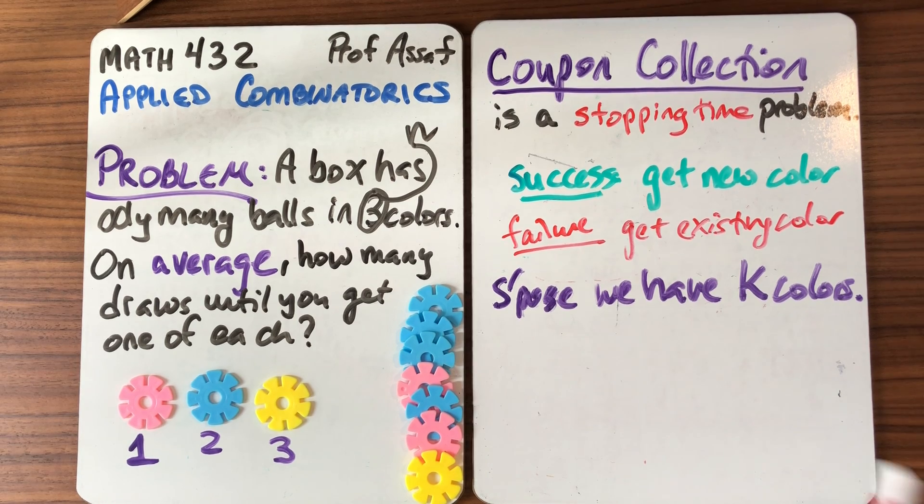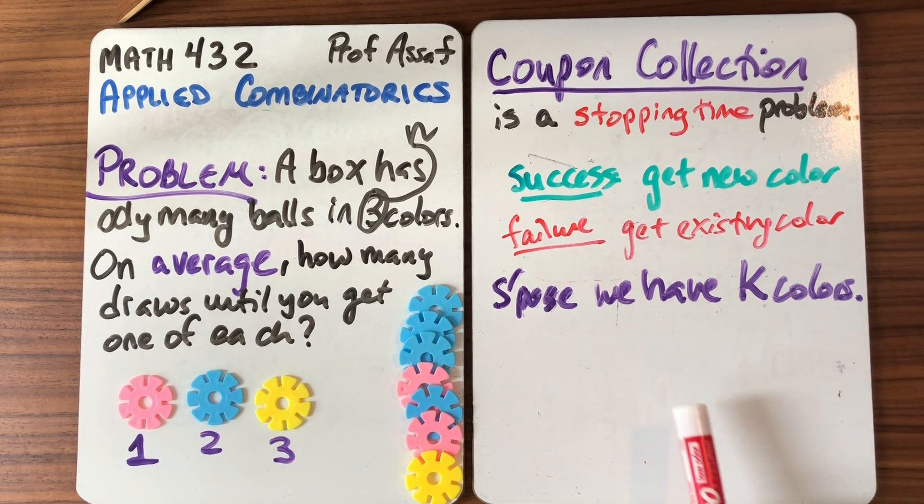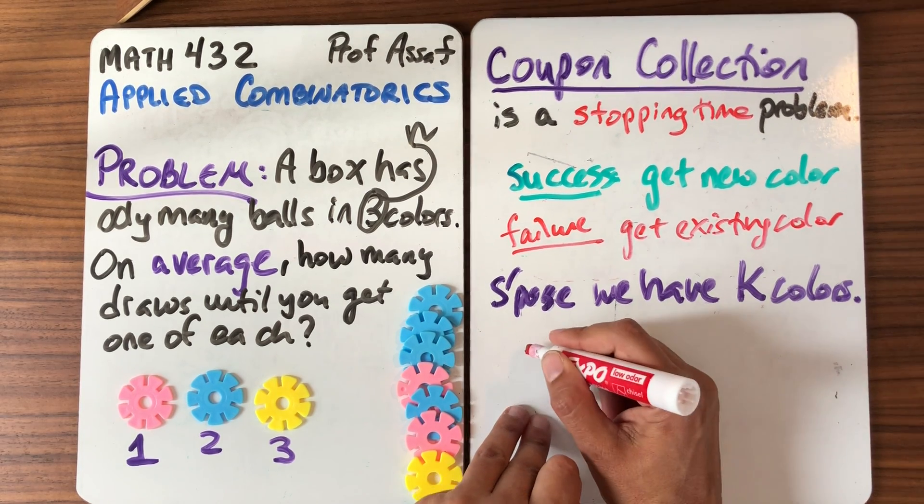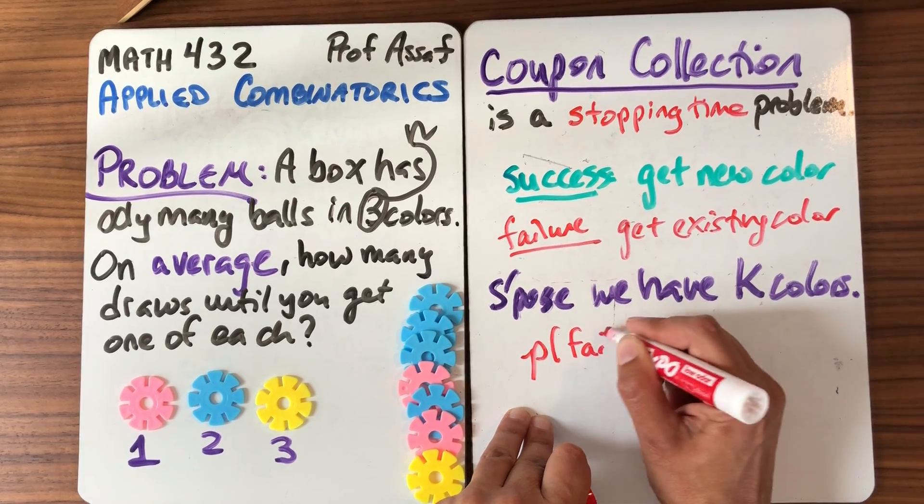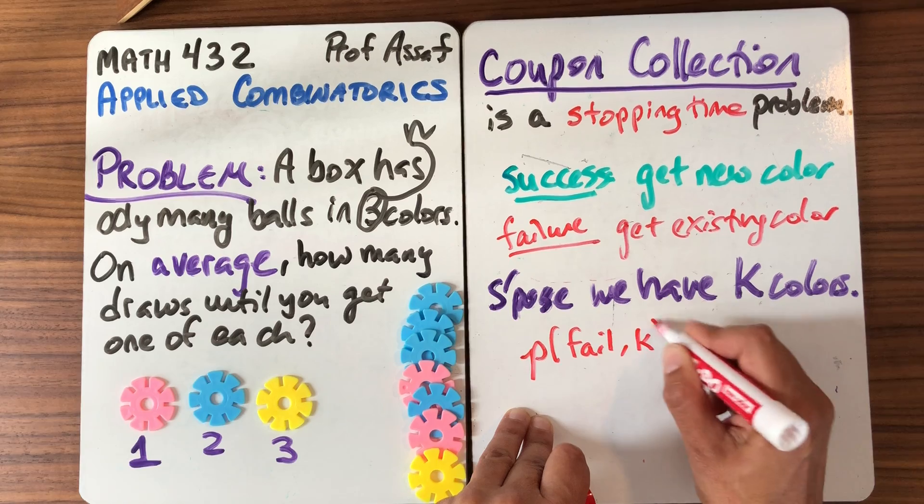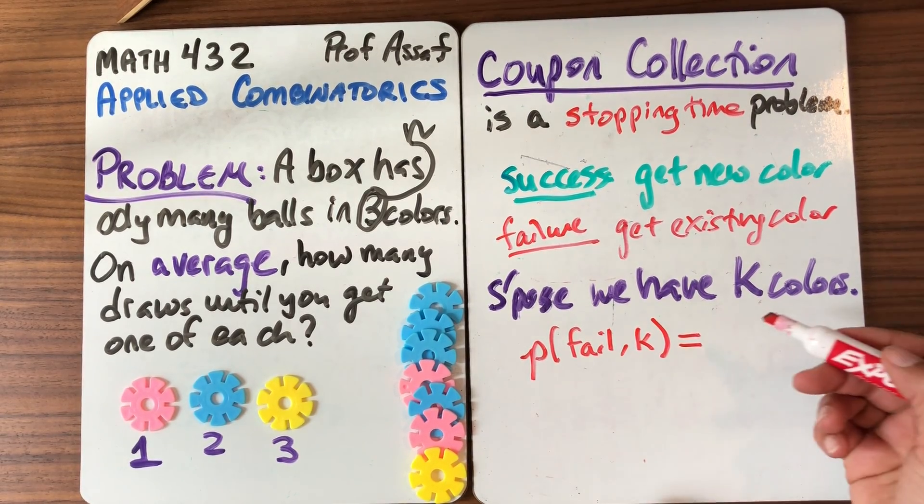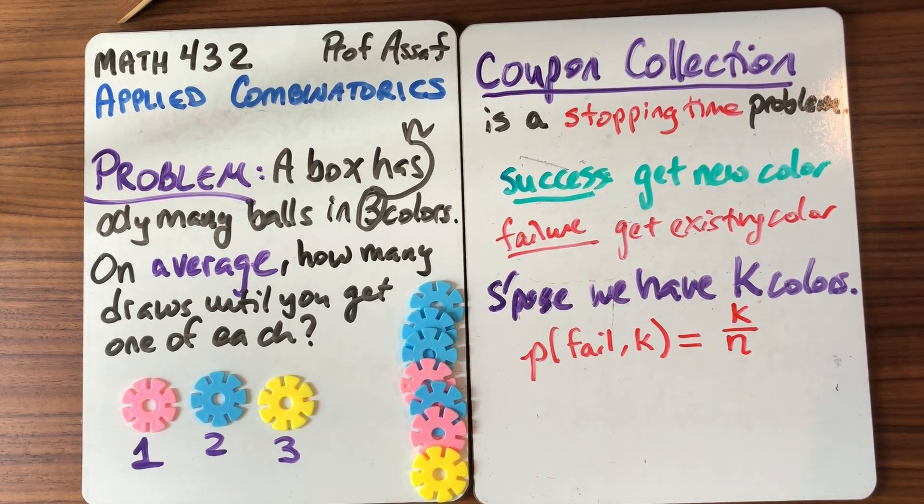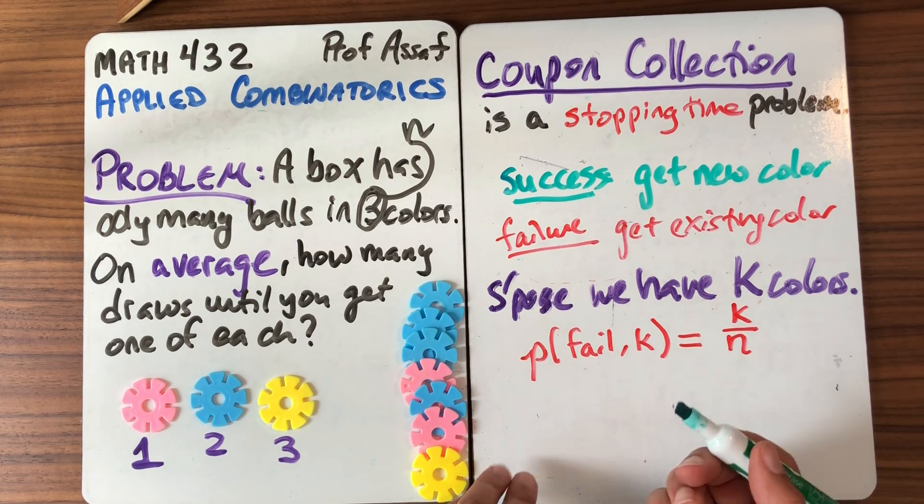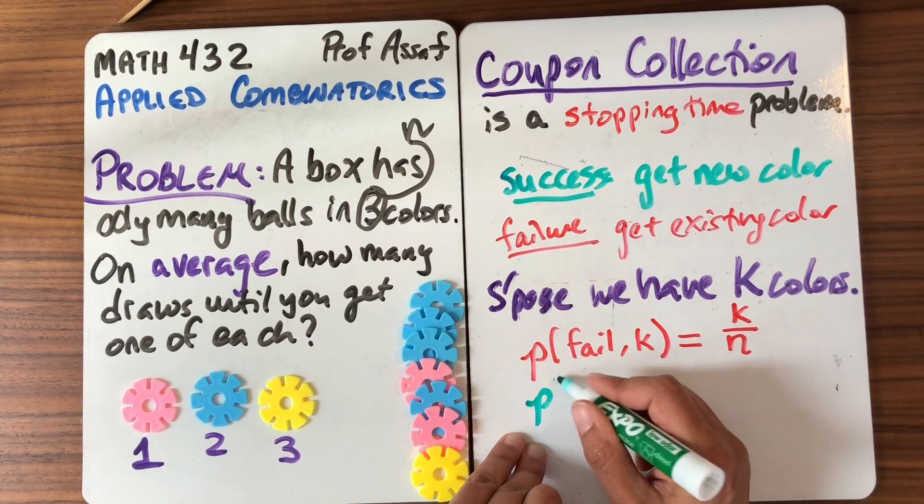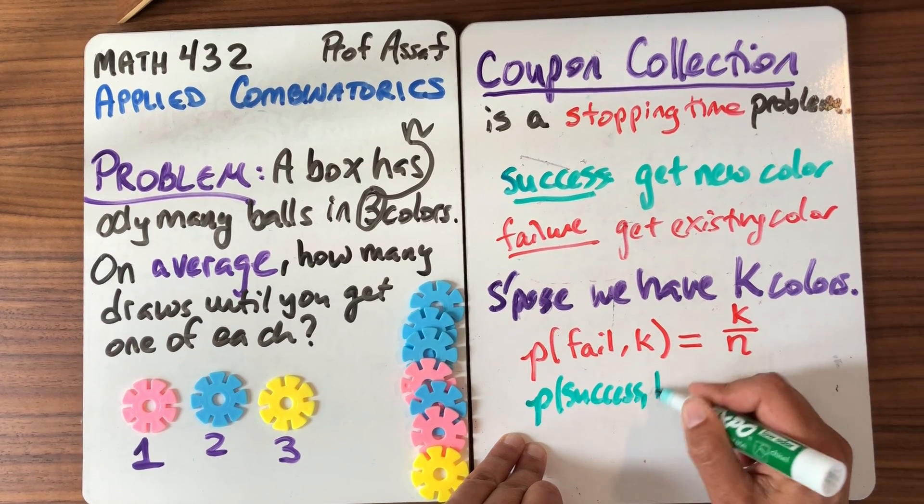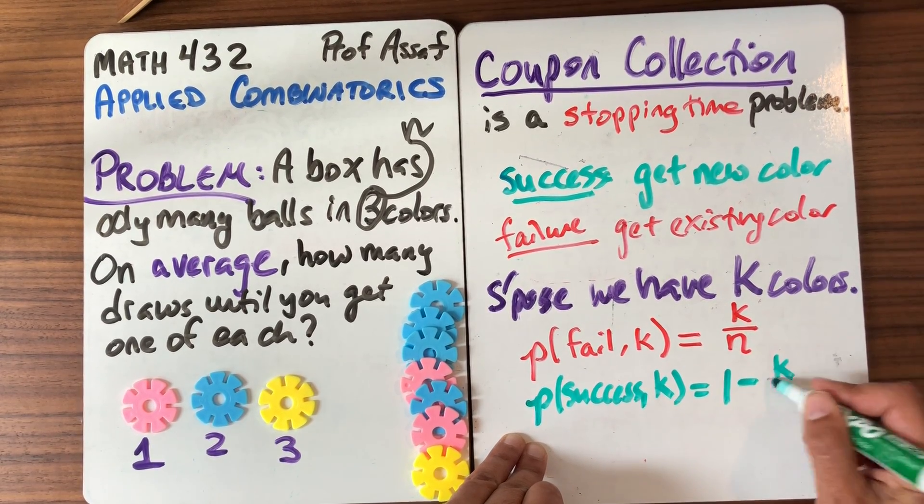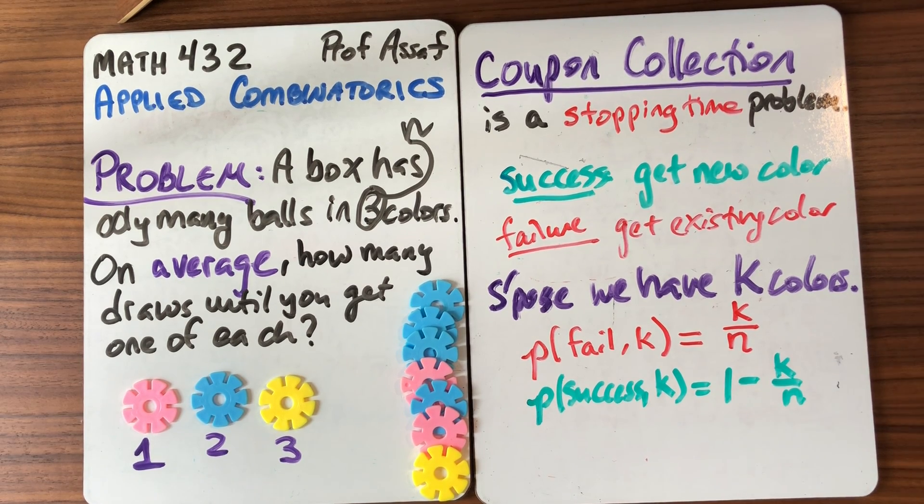Which is easier to think about, the probability of success or the probability of failure? Well, I think it's easier to think about the probability of failure, but they're both kind of equivalent. So the probability of a failure event, given that we already have k colors, what is that? Well, when I draw, I need to draw one of those k colors, and there are a total of n colors. So what's the probability of success? Success is not failing. So the probability we succeed, given k colors, is going to be 1 minus k over n. I could also think of that as n minus k over n, but it's a little easier, I think, to think of it this way.